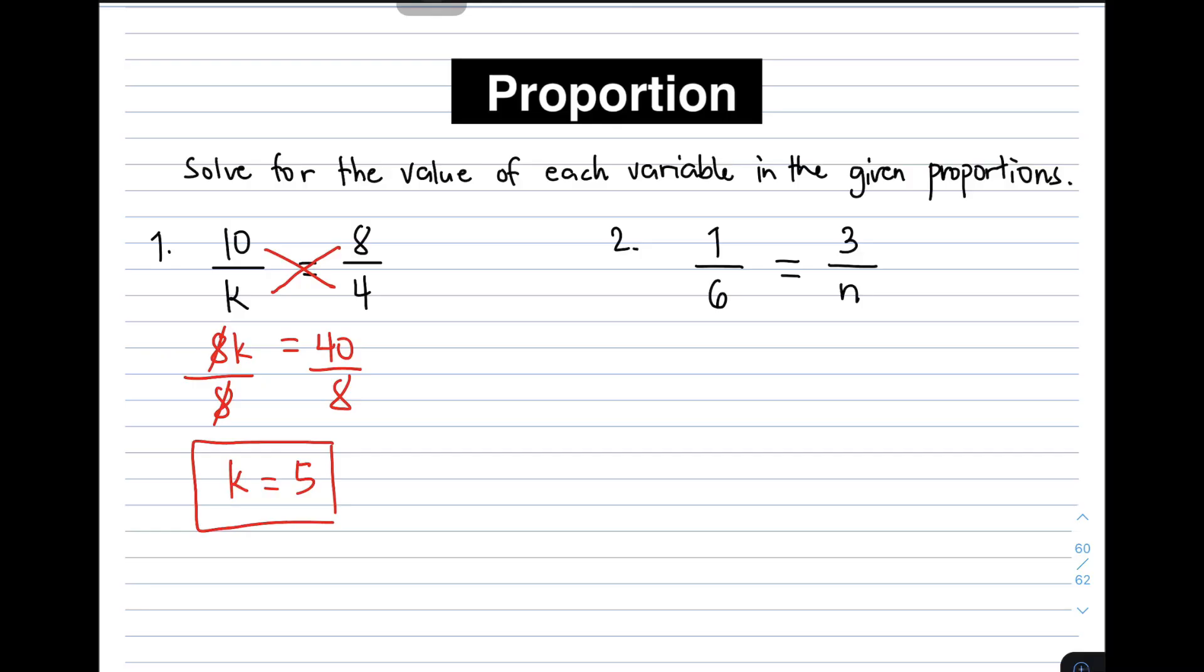Meaning if we need to complete that given proportion, that will be 10 over 5 is equal to 8 over 4. That's it for item number 1.